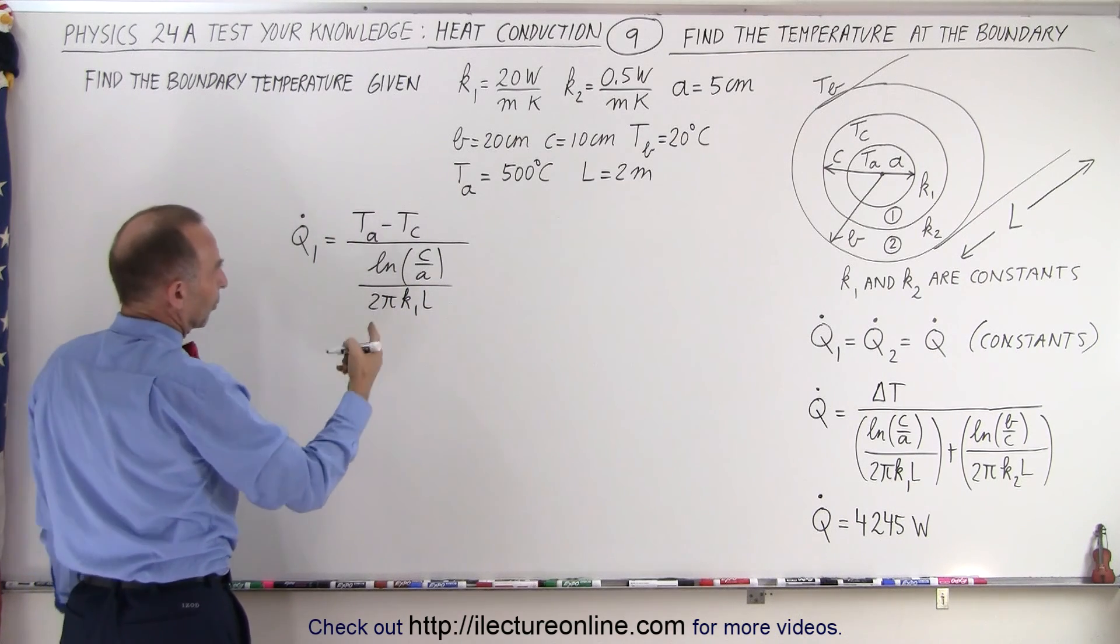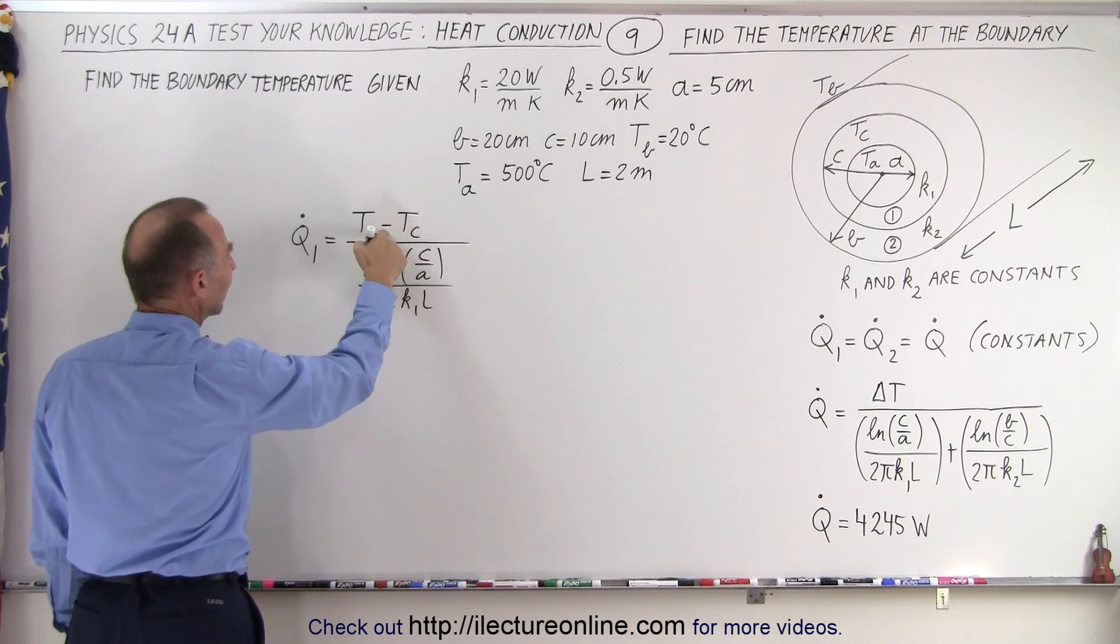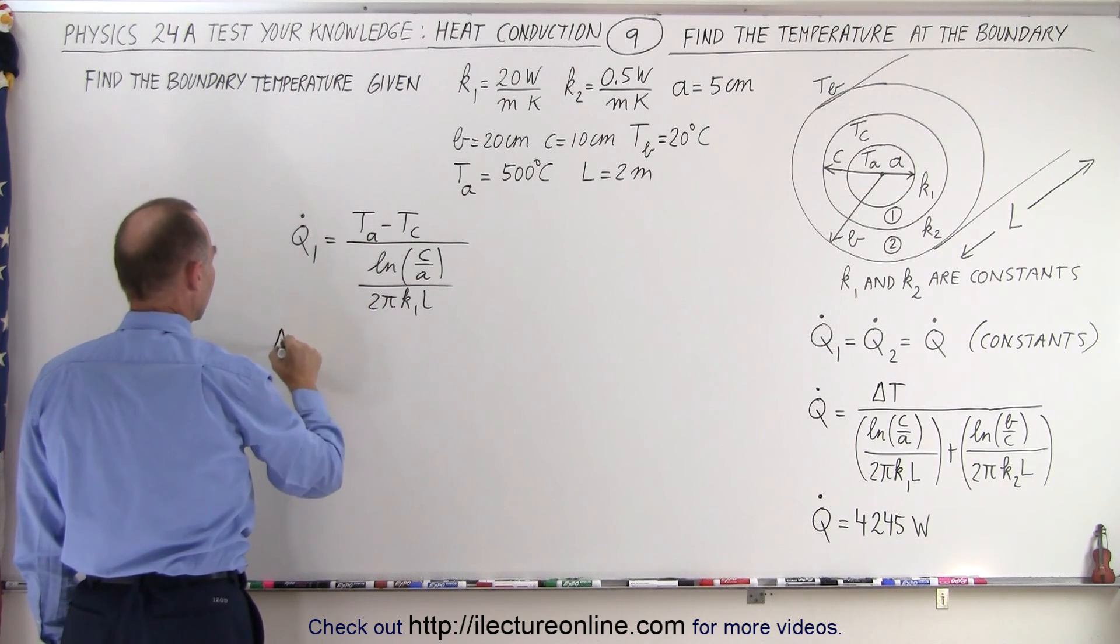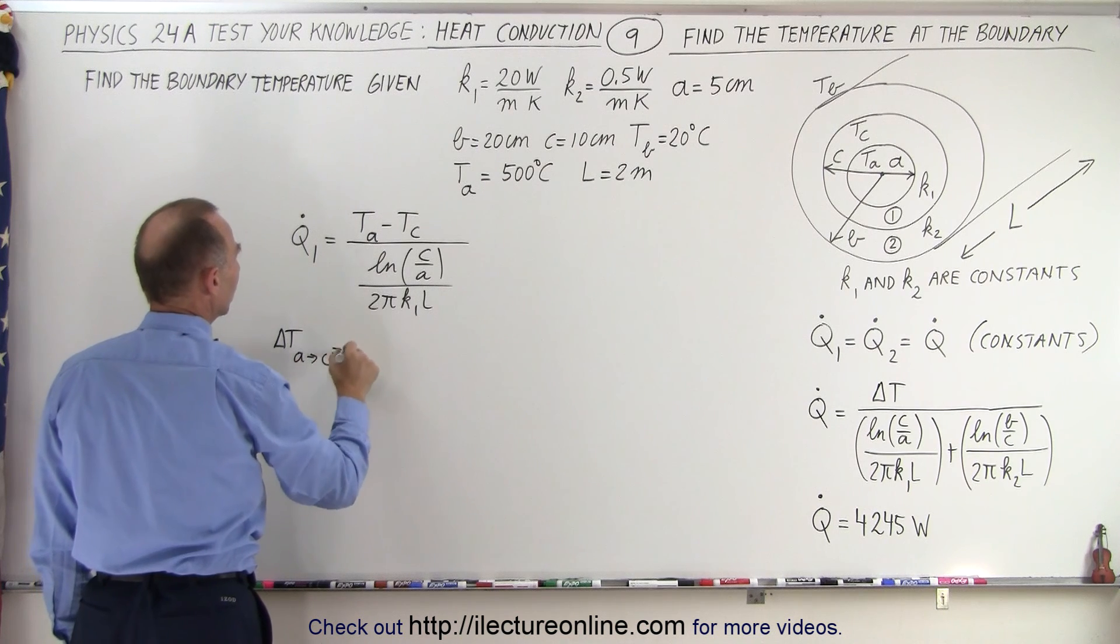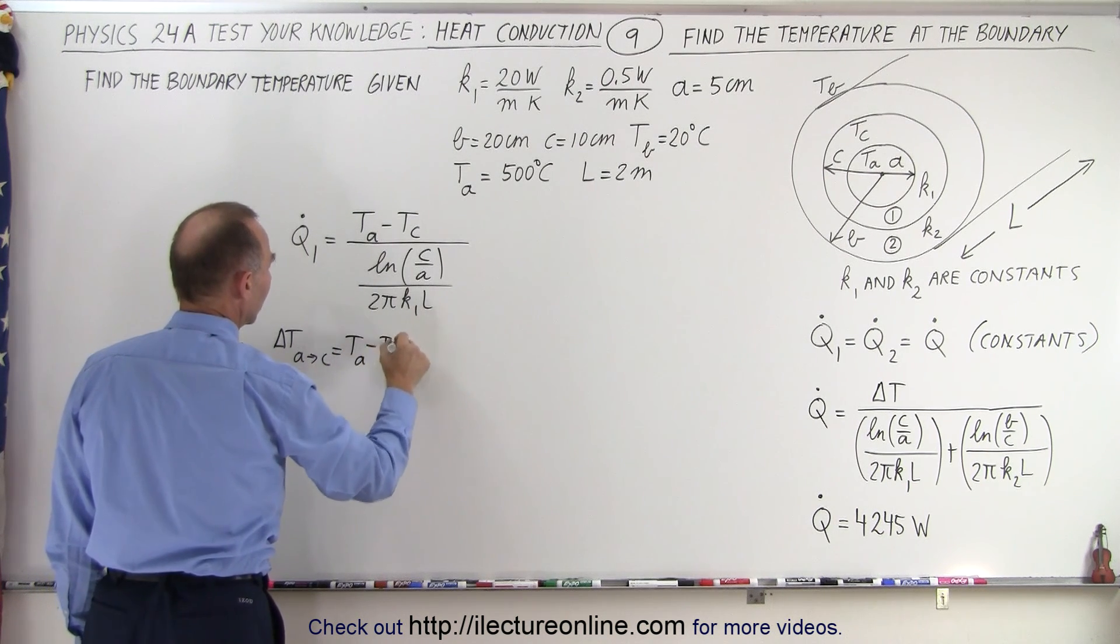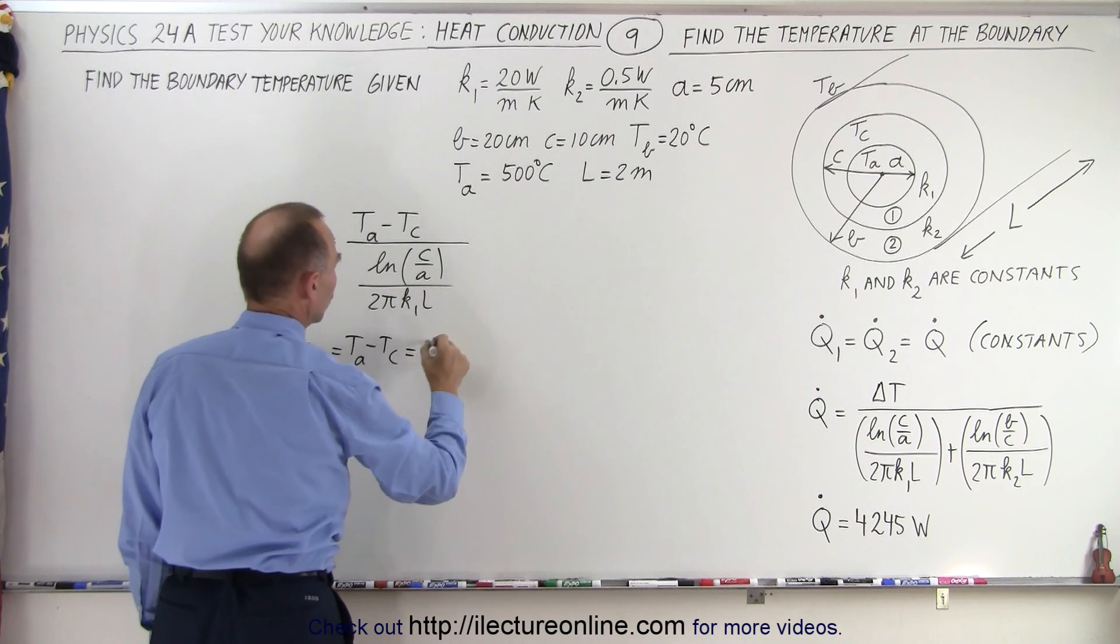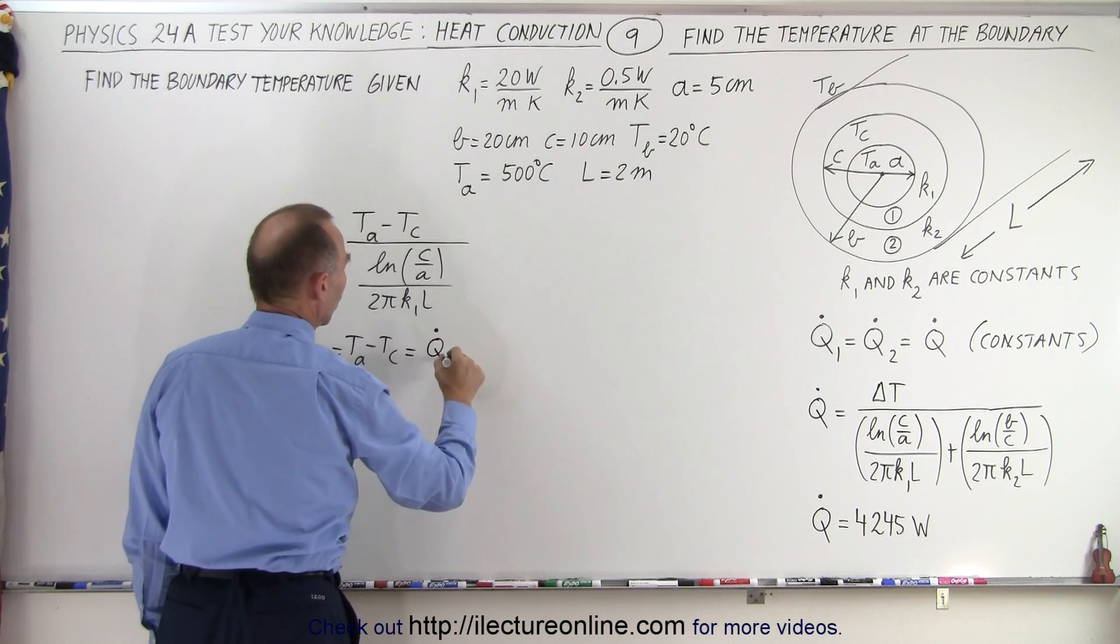And so if that's true, and of course that is what we found before, we can then take the delta T here, the delta T between layers A and C, which is equal to T_A minus T_C, is equal to Q.1.